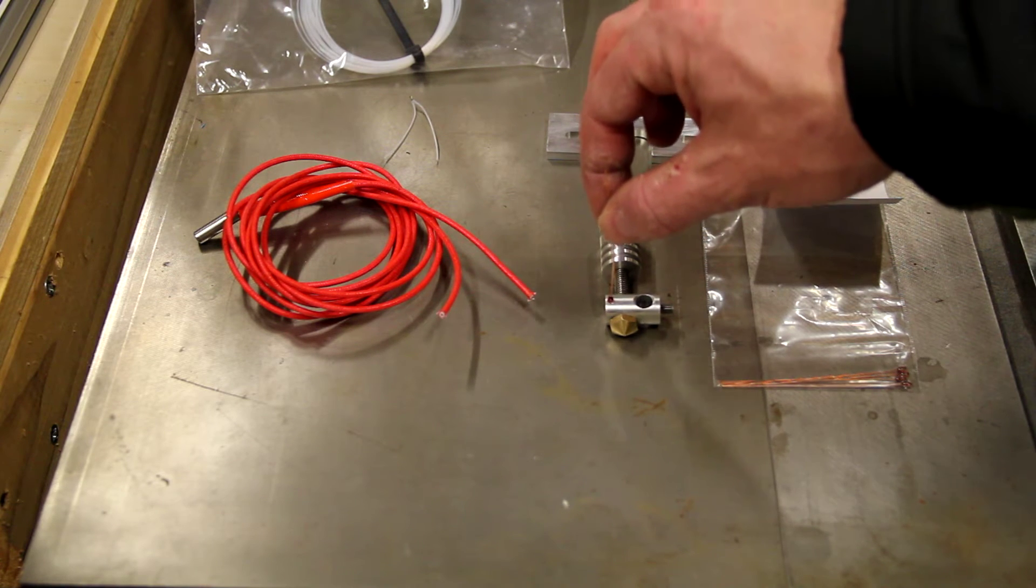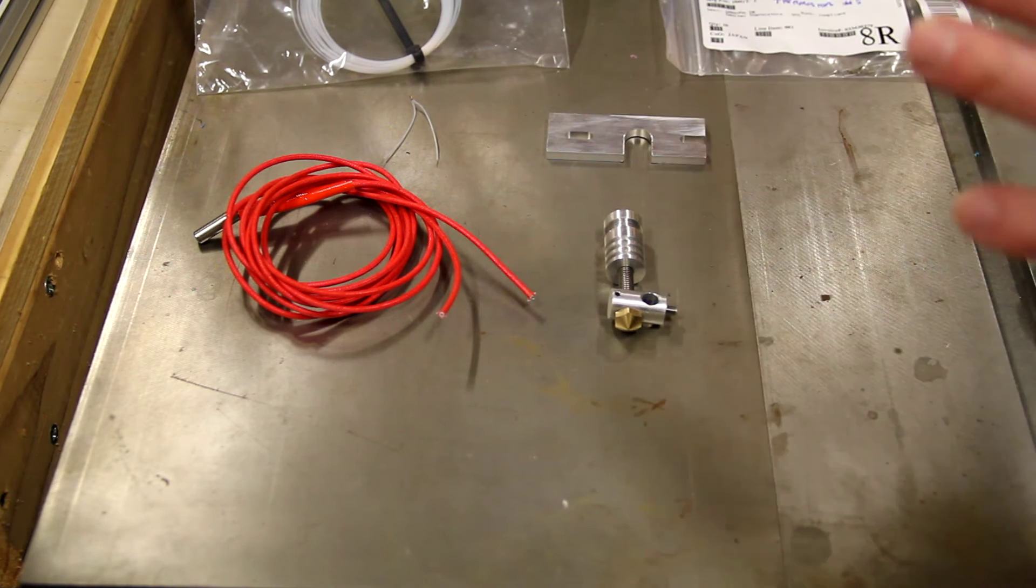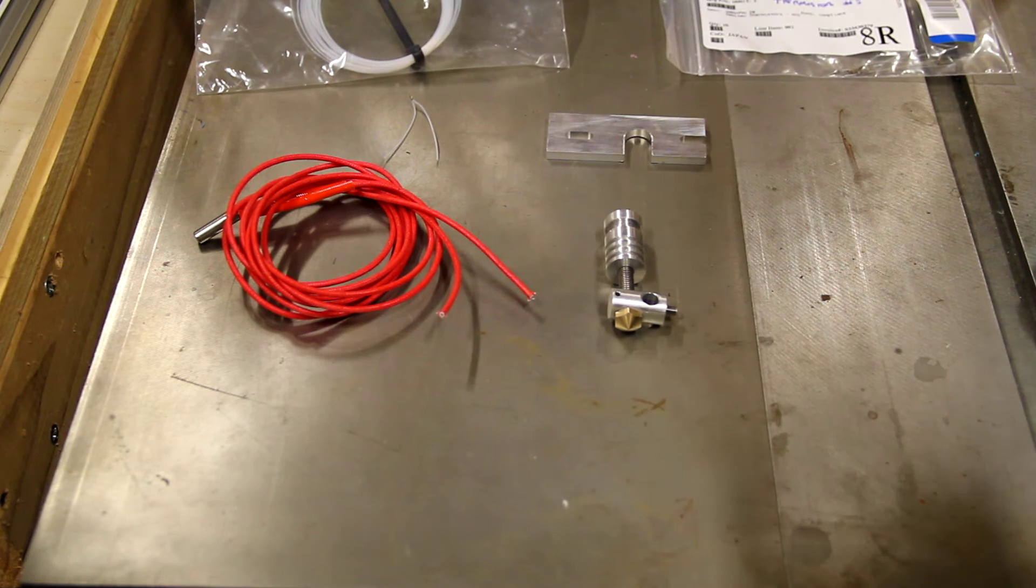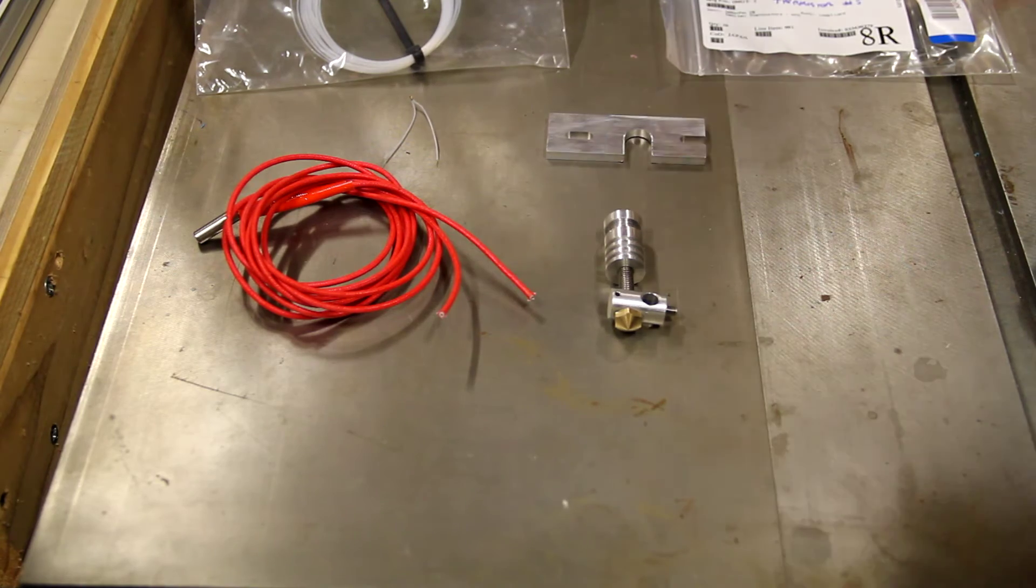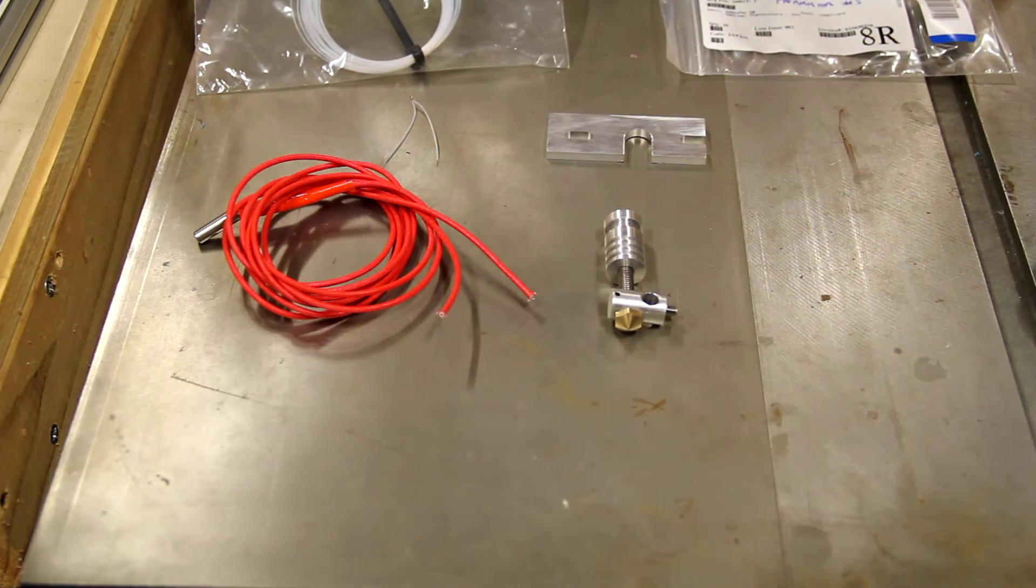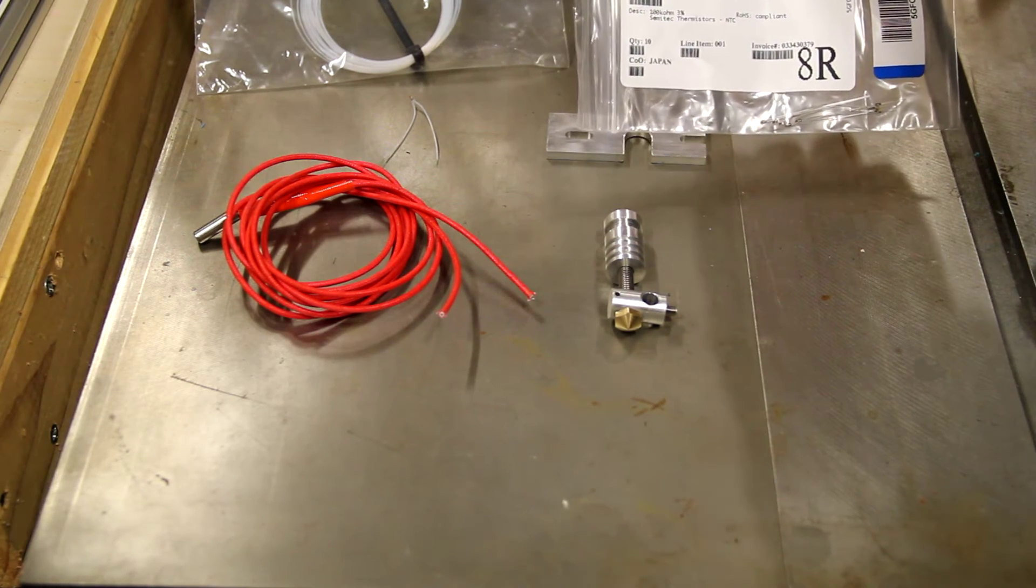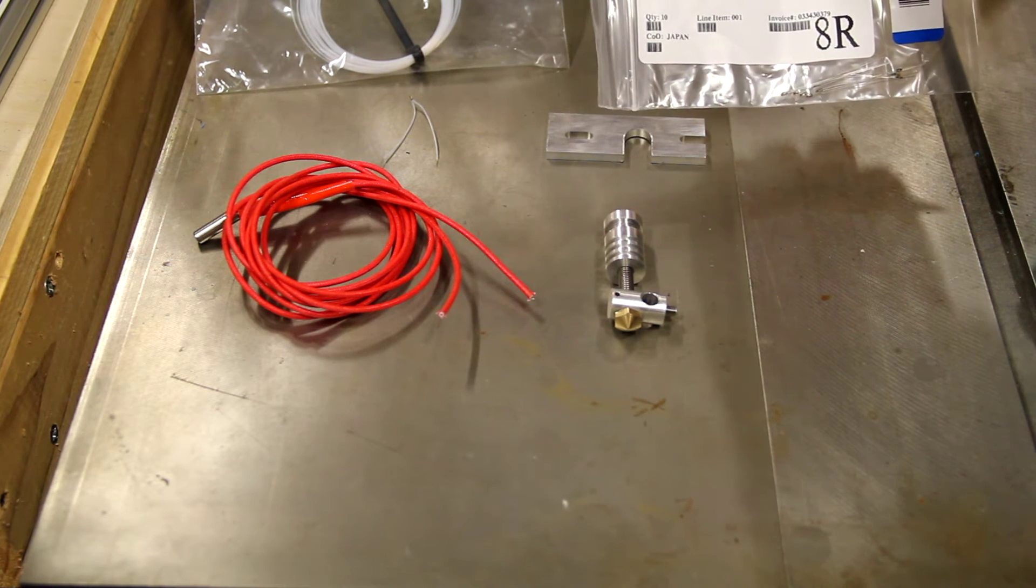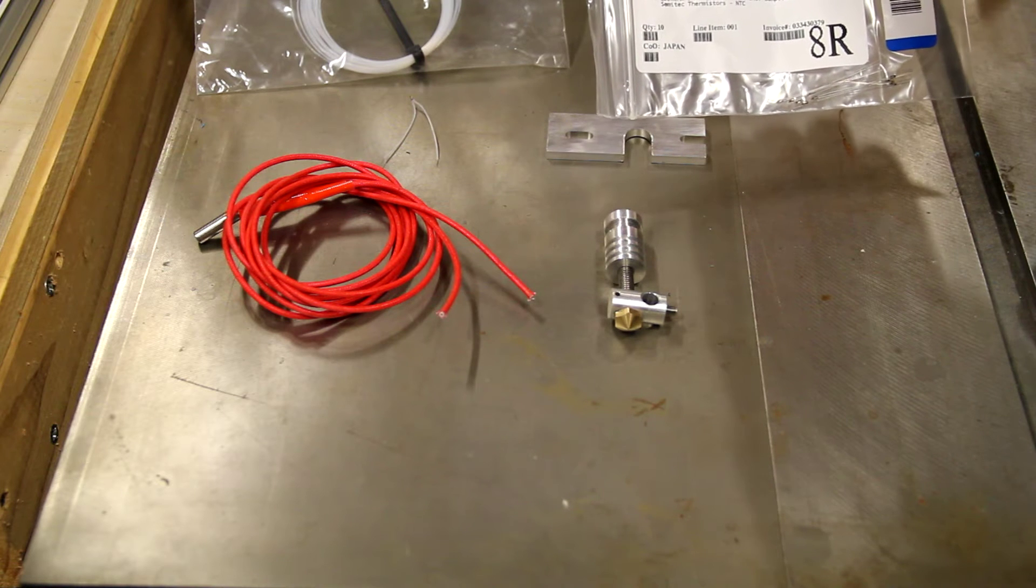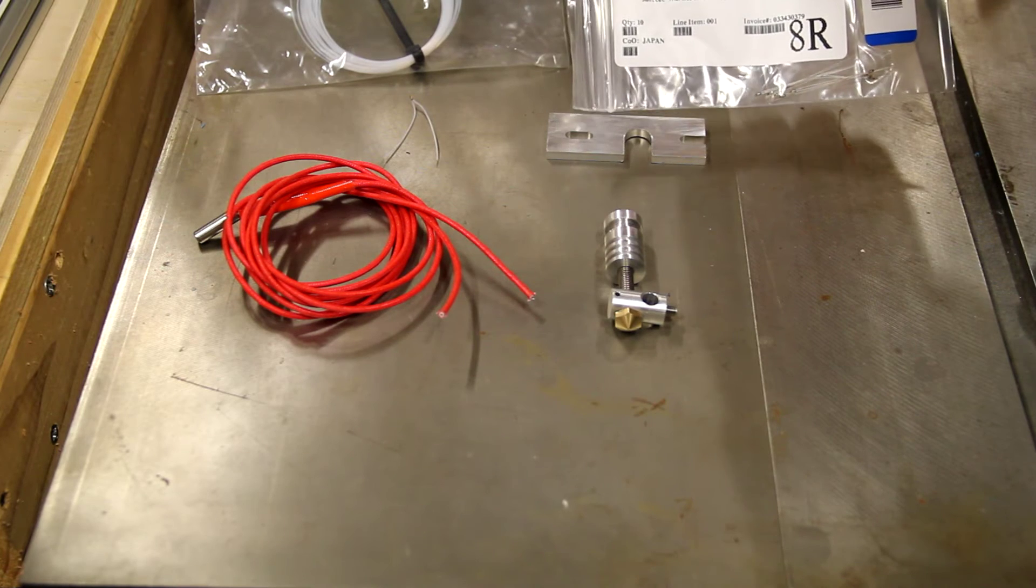Now that's actually okay because Epcos has actually discontinued this thermistor so the supply that's out there is pretty much all that's going to be out there. It's probably fine that the RepRap community is moving away from that and what we're moving toward instead is this one right here which I call thermistor number five because in the Marlin tables it is number five. This is made by Semitec thermistors and it's the model number that ends in 104GT2 and you can get these from Mouser Electronics.